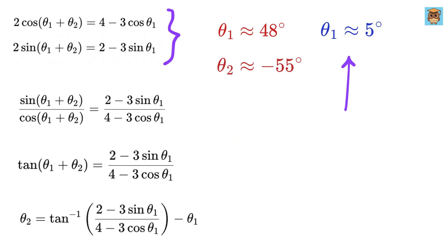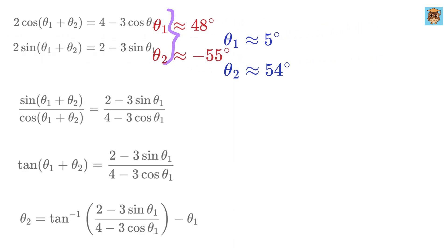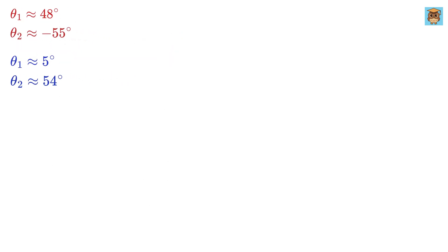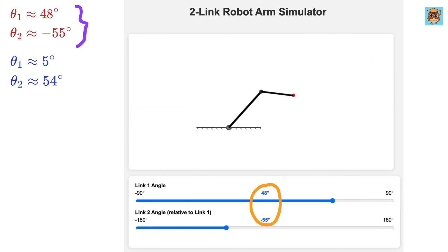When theta 1 is 5 degrees, we get theta 2 as 54.3 degrees. Therefore, these are the two possible values of theta 1 and theta 2. This value already confirms the solution, which we obtained initially by hit and trial.